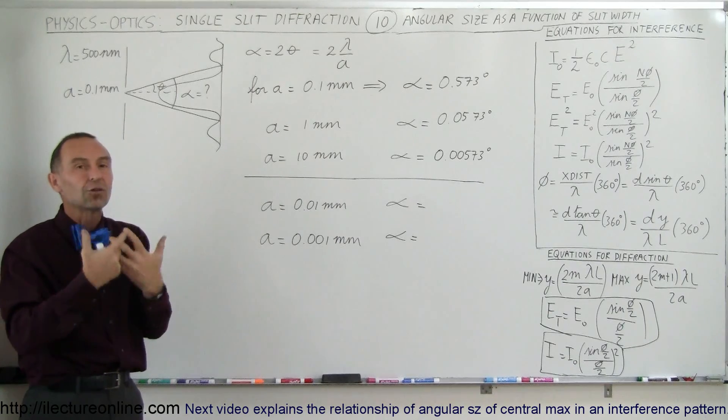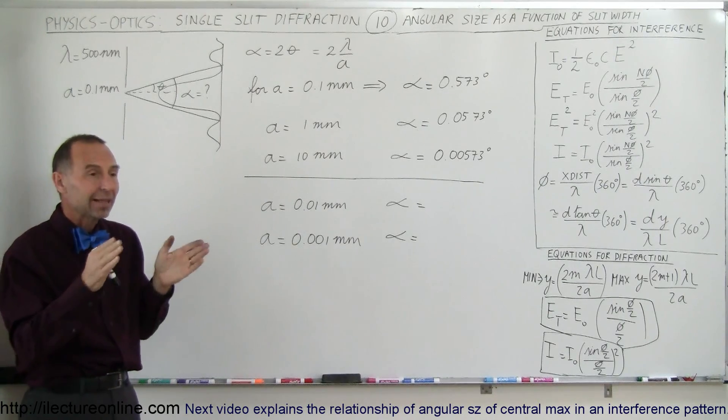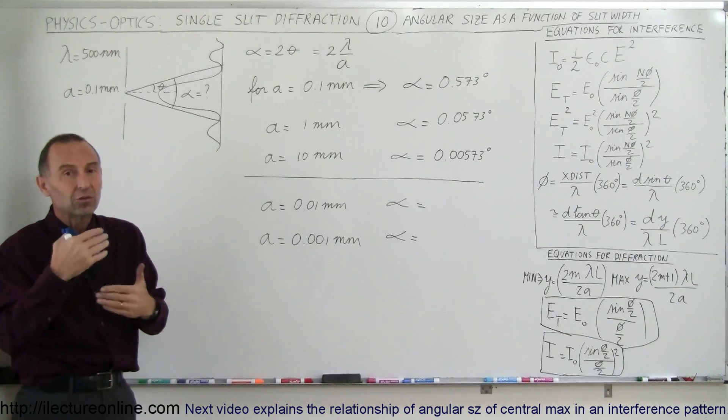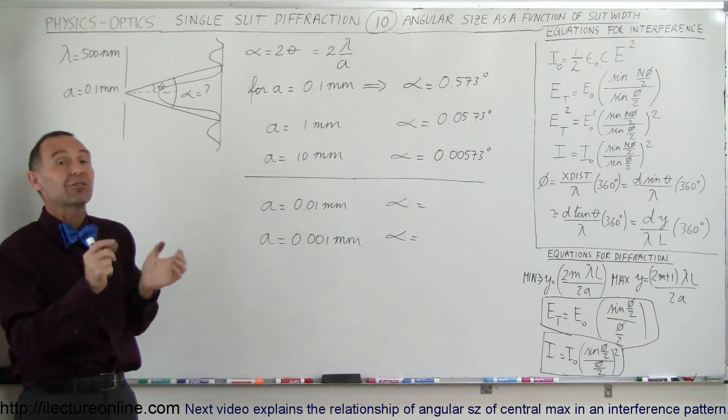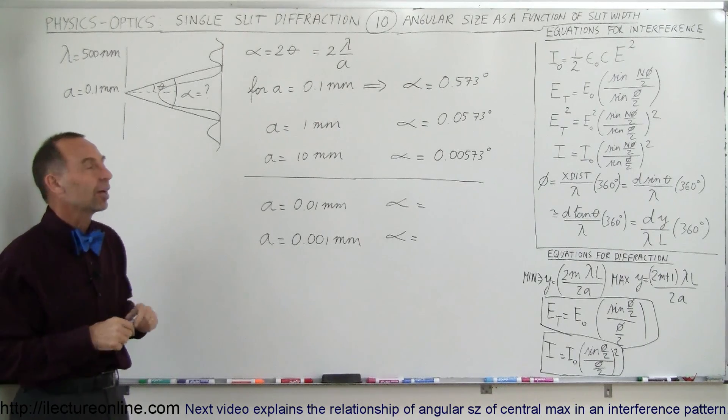As the slit width gets bigger, this goes hand in hand with the concept that the slit width needs to be somewhat comparable in size to the actual wavelength of light, otherwise the diffraction pattern does not exist.